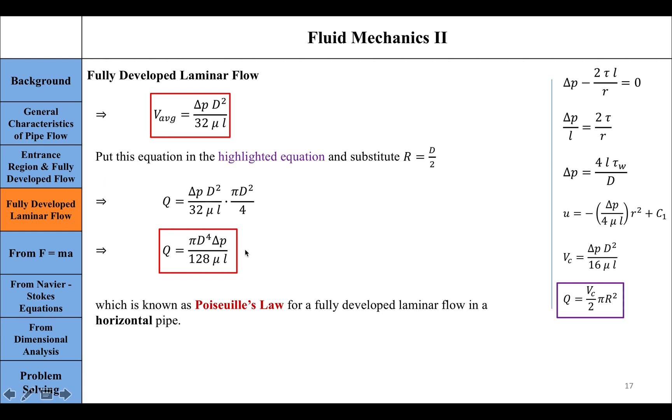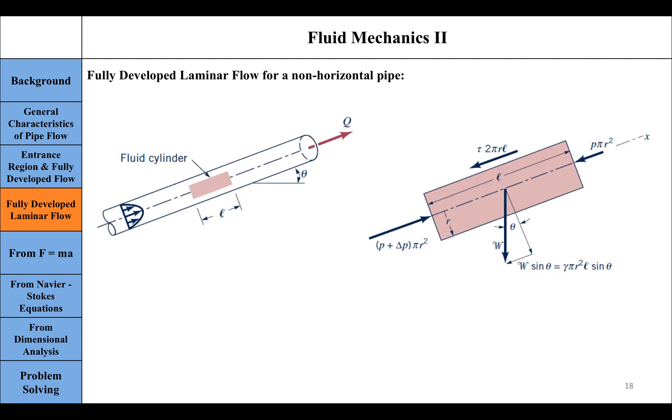If we adjust these equations for a pipe that is not horizontal, we include the combined effect of pressure and gravity. Gravity is in terms of specific weight, γ = ρg, and θ, which is the angle between the pipe and the horizontal surface.